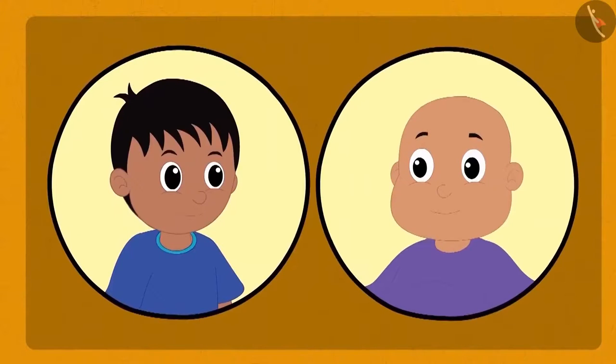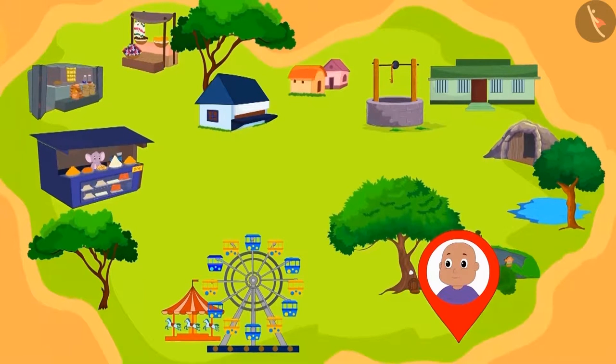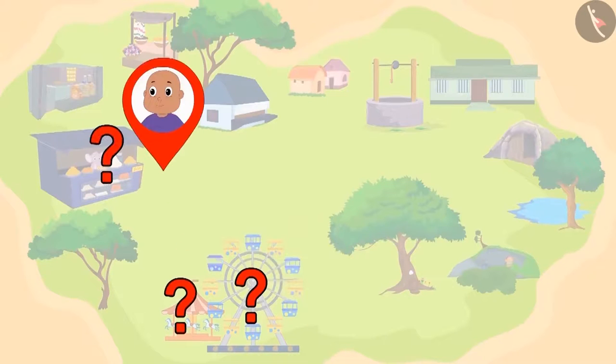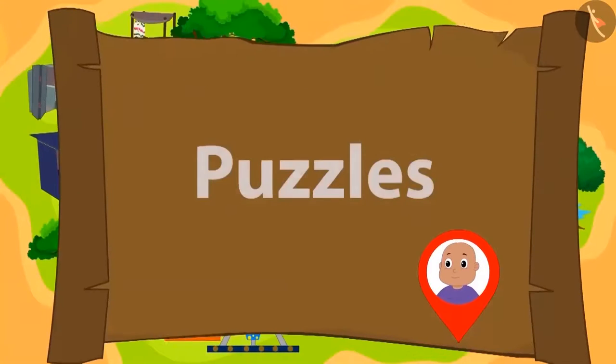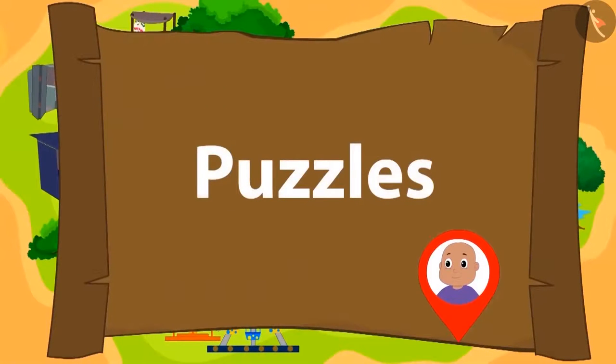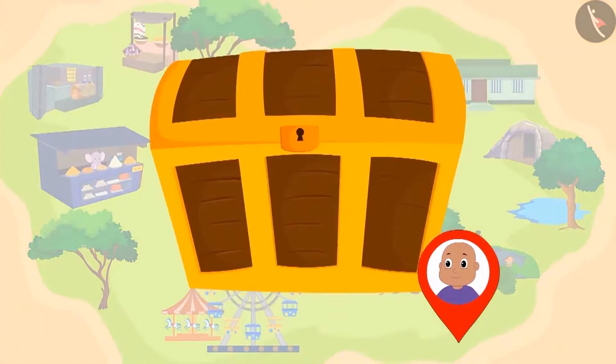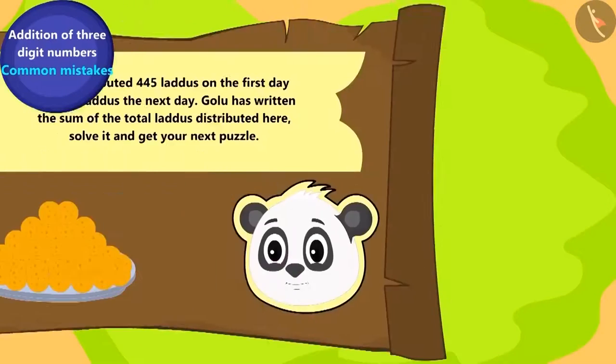Raju and Bablu are playing a unique game. Raju has hidden some puzzles for Bablu in the village. After solving each puzzle correctly, Bablu will reach the location of the next puzzle. There, he will find another puzzle. Once all the puzzles are solved, Bablu will find Raju's hidden object. Here is Bablu's first puzzle.